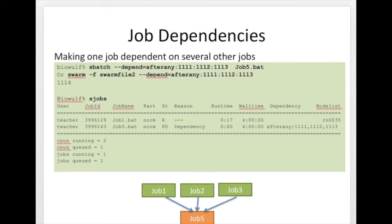You can also make one job dependent on several other jobs. In this case, you want jobs 1, 2, and 3 to run independent of each other, and after all three have completed you want job 5 to run. You submit job 5 with sbatch --depend=afterany: followed by the job IDs of all the previous jobs separated by colons.